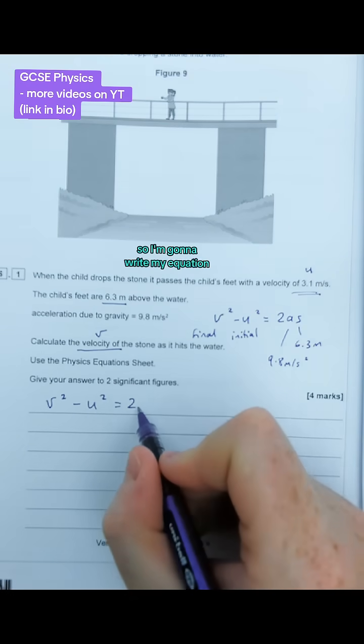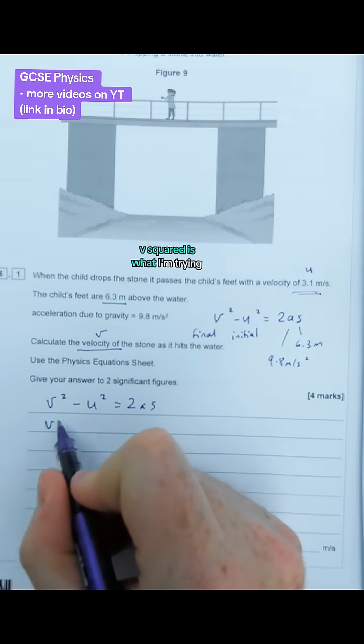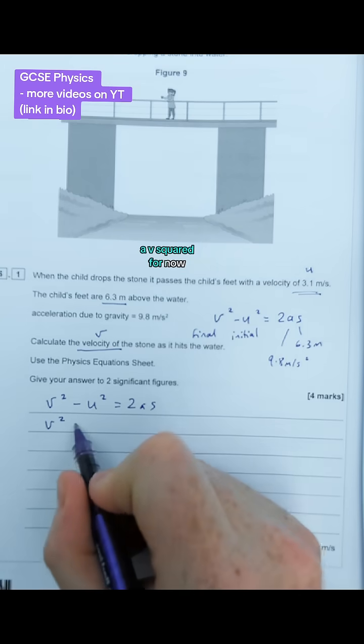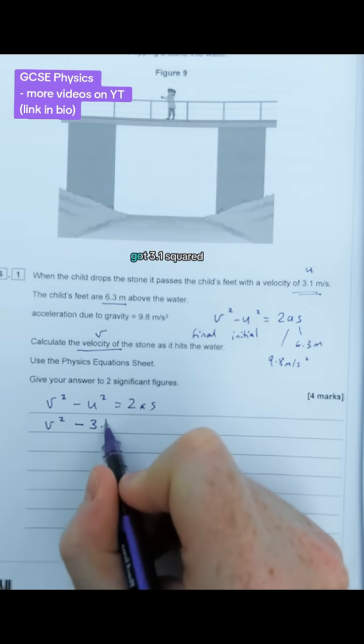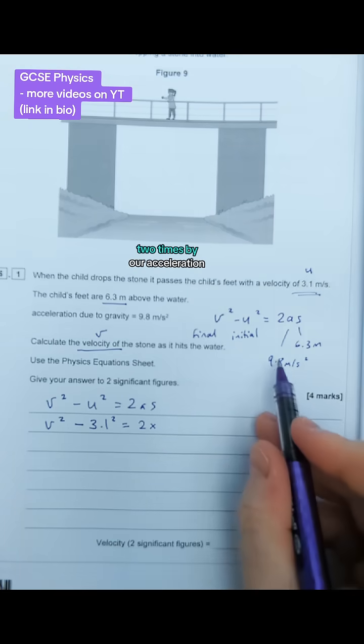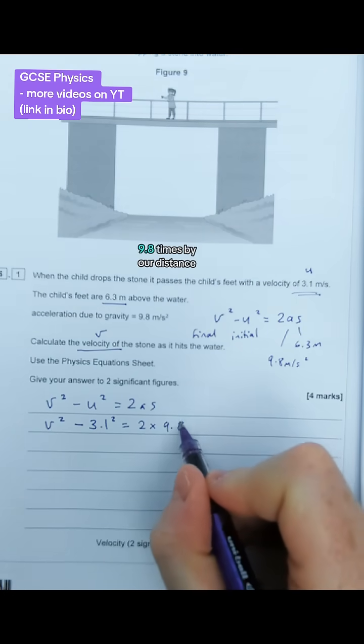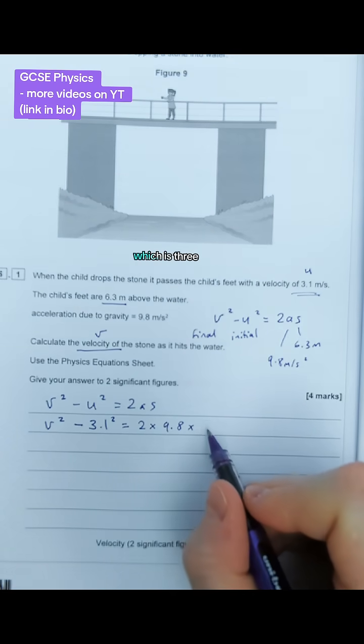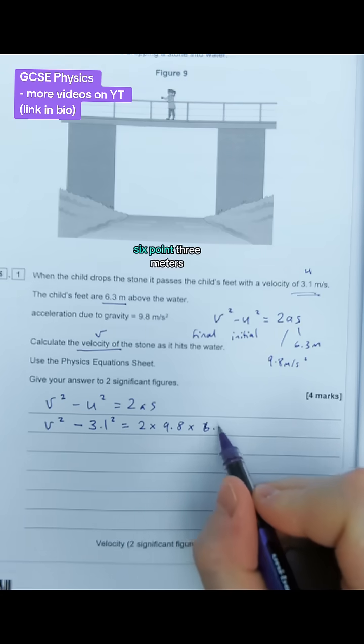I'm going to write my equation down here again. v² is what I'm trying to find, so I have to leave that as v² for now. Let's plug our values in. We've got 3.1 squared - that's our value for u - equals 2 times our acceleration, 9.8, times our distance, which is 6.3 meters.